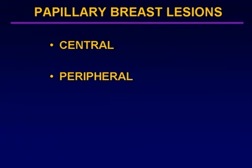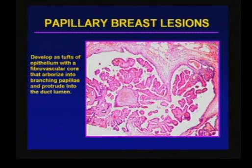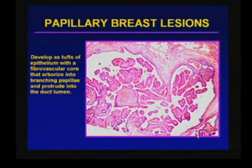Papillary lesions can be categorized into two groups depending on their location in the breast — they can be central or peripheral. Pathologically, papillary lesions develop as tufts of epithelium with a fibrovascular core, which is the pink area here. They arborize into branching papillae, and the purple areas in the periphery are the epithelium. They protrude into a duct lumen — this is actually a dilated or distended duct, and what we sometimes see are cysts, but they really represent ducts.